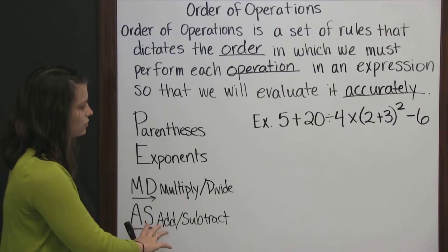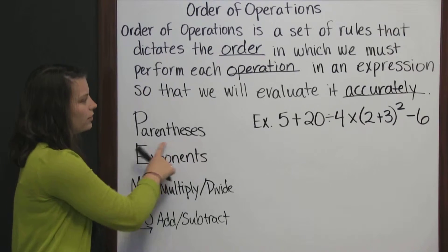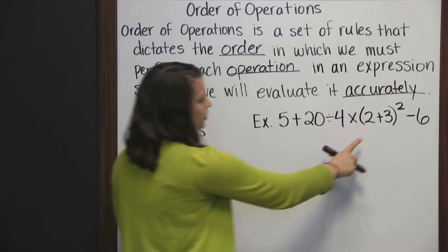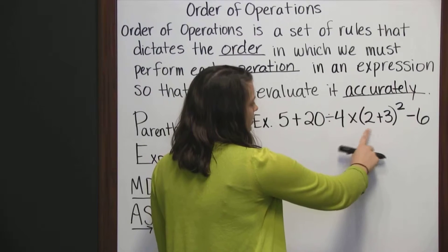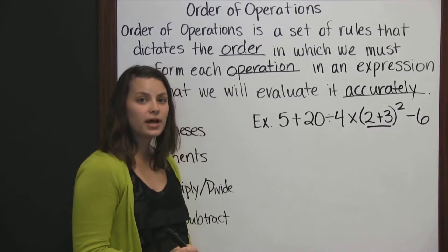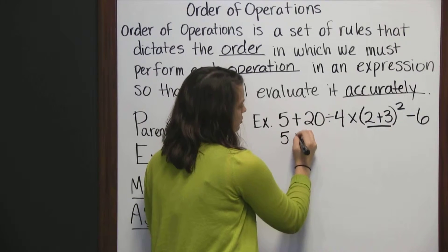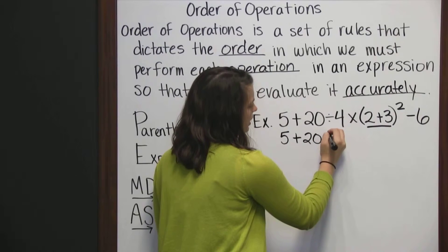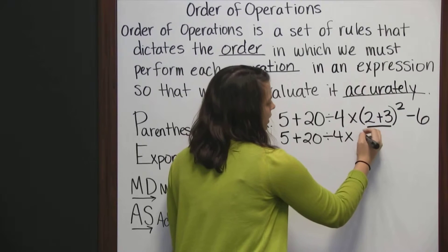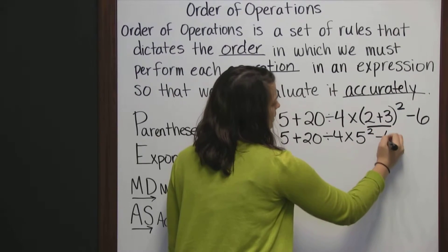Let's apply these rules to this example. We always start with parentheses. Looking at our expression, we've got some parentheses here around 2 plus 3. So we have to start by adding 2 plus 3. So that means nothing else in our expression is going to change. 5 plus 20 divided by 4 times 2 plus 3 is 5 squared minus 6.